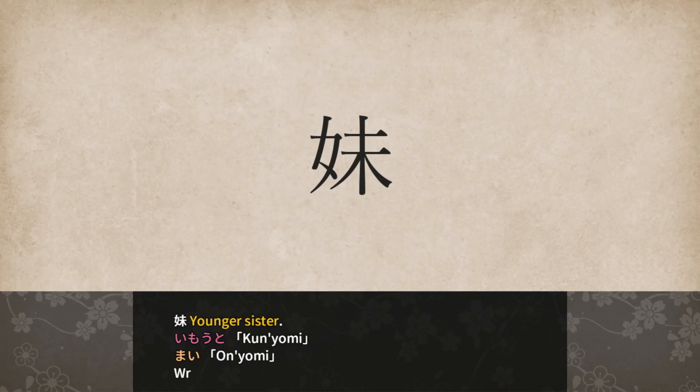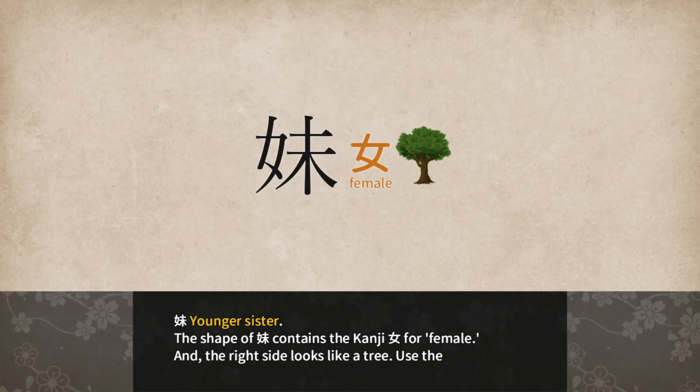Imouto — younger sister. Imouto for Kunyomi and Mai for Onyomi. Written with 8 strokes. The shape of Imouto contains the kanji Onna for female, and the right side looks like a tree. Use the saying: my younger sister loves to climb trees.